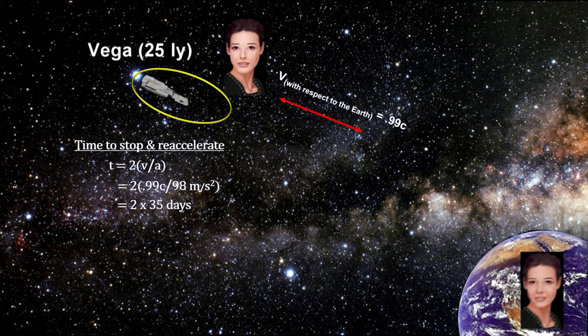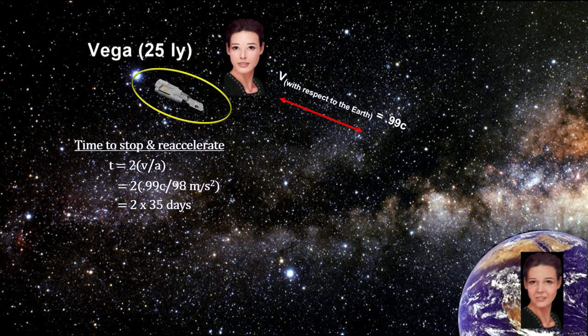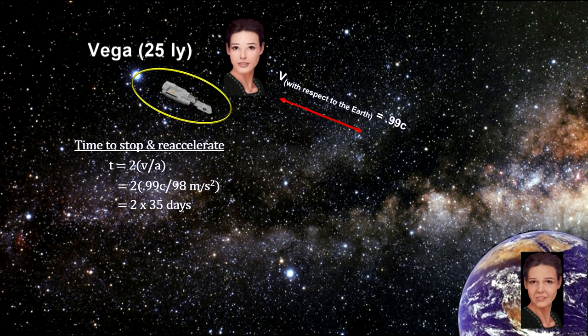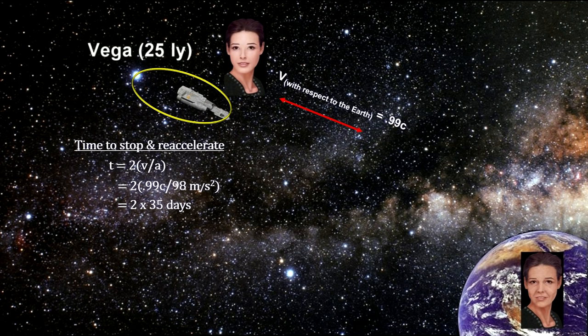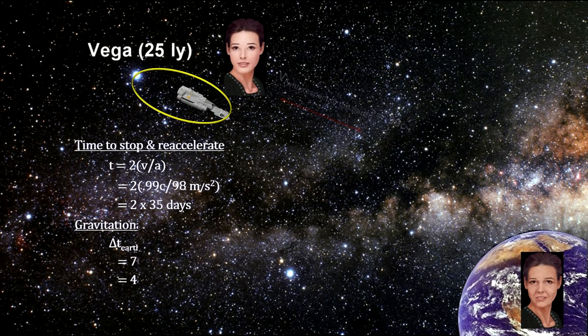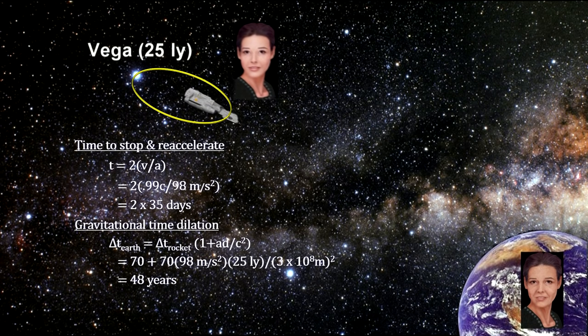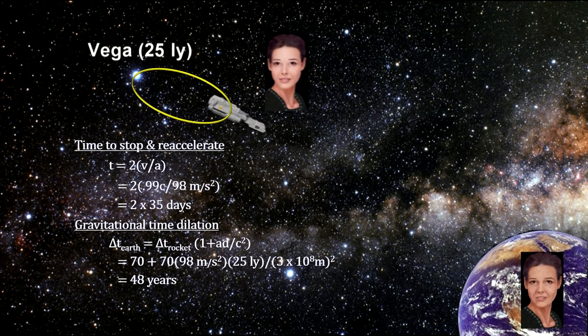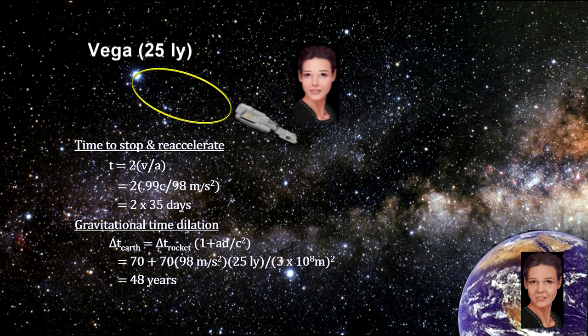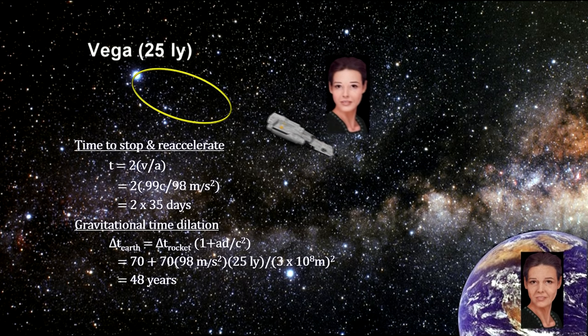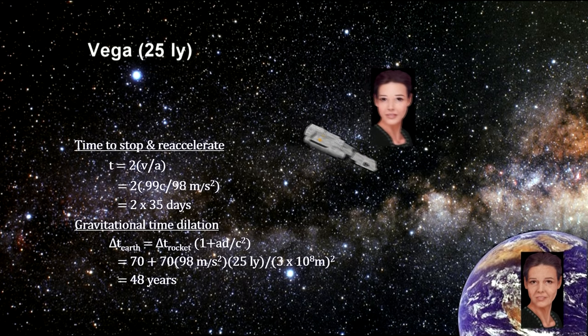Let's say her acceleration is 10 g's, or 98 meters per second squared. At this rate, it would take her 35 days to decelerate to zero and another 35 days to re-accelerate back to 99% of the speed of light. Gravitational time dilation shows that as her clock ticks 70 days, her twin's clock on Earth will have ticked 18,134 days. That's 48 years.